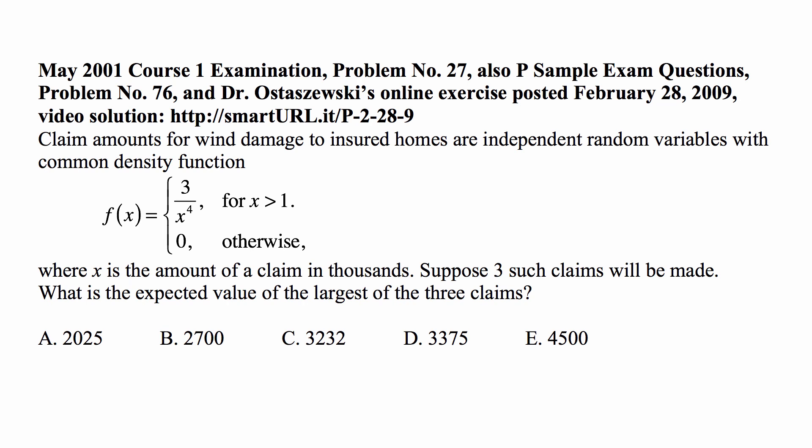Here is a problem for today for exam P on probability. Claim amounts for wind damage to insured homes are independent random variables with common density function 3 over x to the fourth for x greater than 1, and 0 otherwise, where x is the amount of a claim in thousands. Suppose 3 such claims will be made — what is the expected value of the largest of the 3 claims?